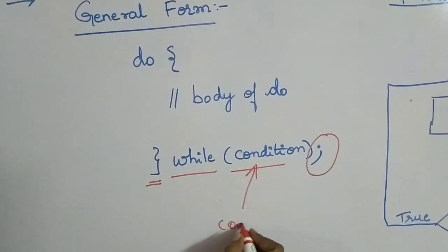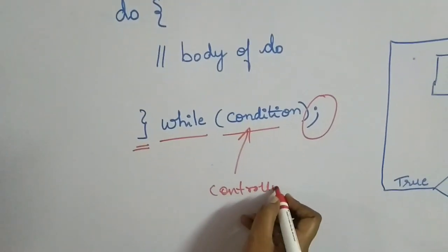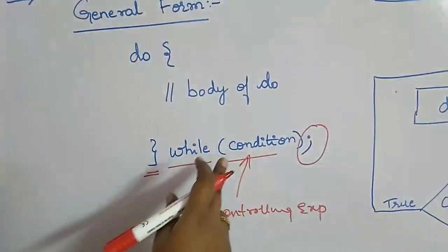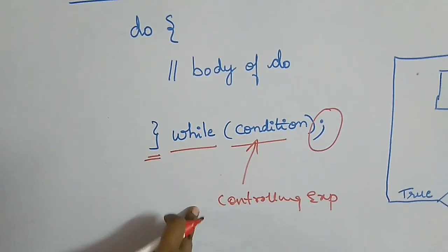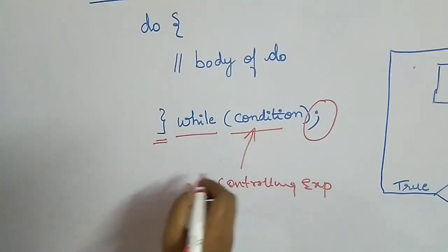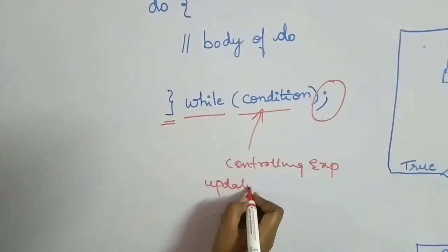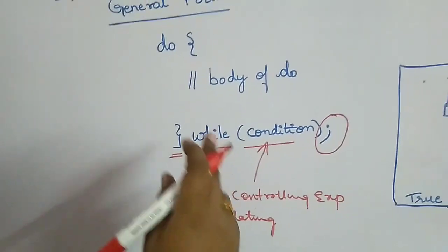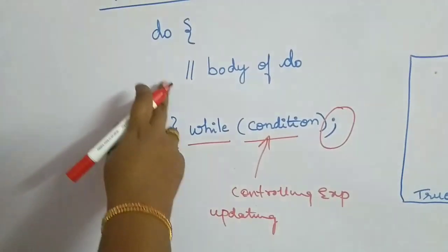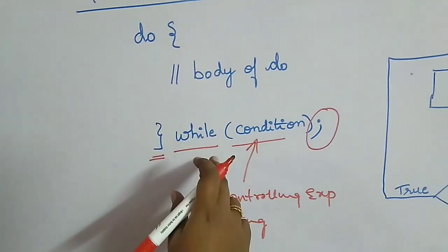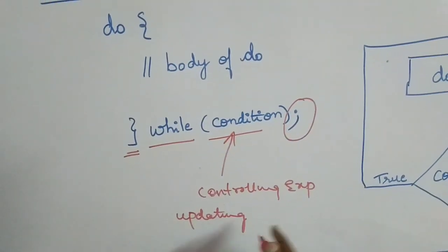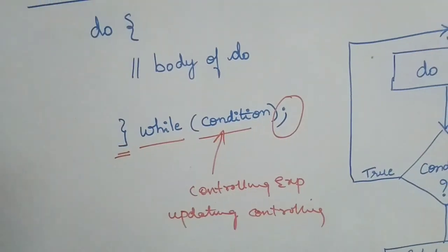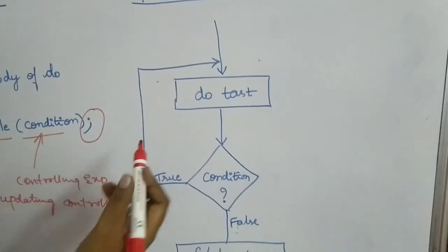The condition is the controlling expression — it determines whether the loop keeps executing. Based on the controlling expression, the loop will be executed. Importantly, there must be something inside the loop body or the while condition that updates the controlling expression; otherwise the loop will run infinitely.